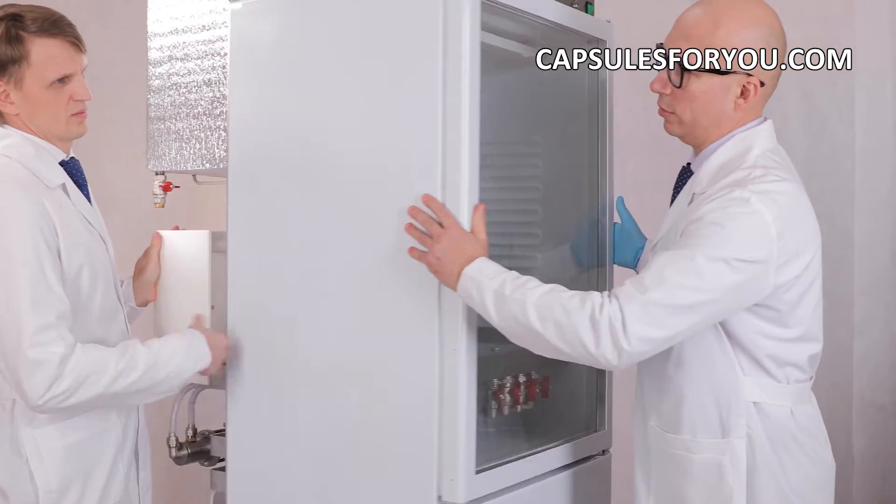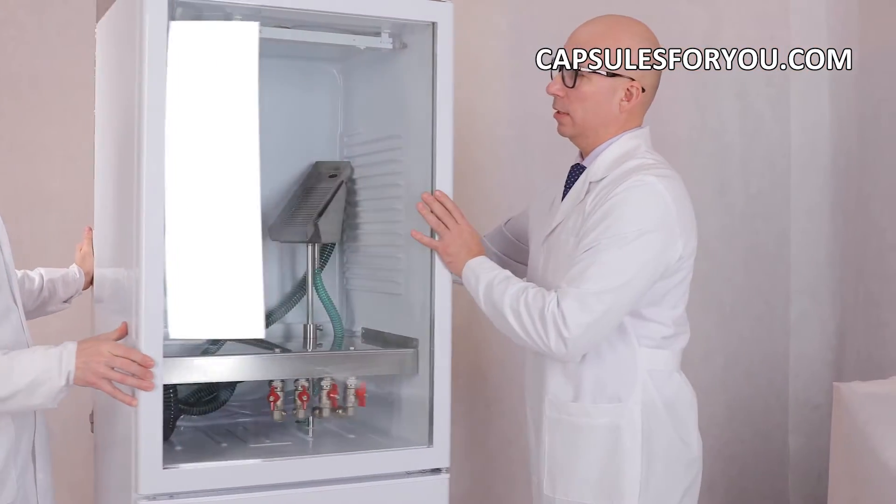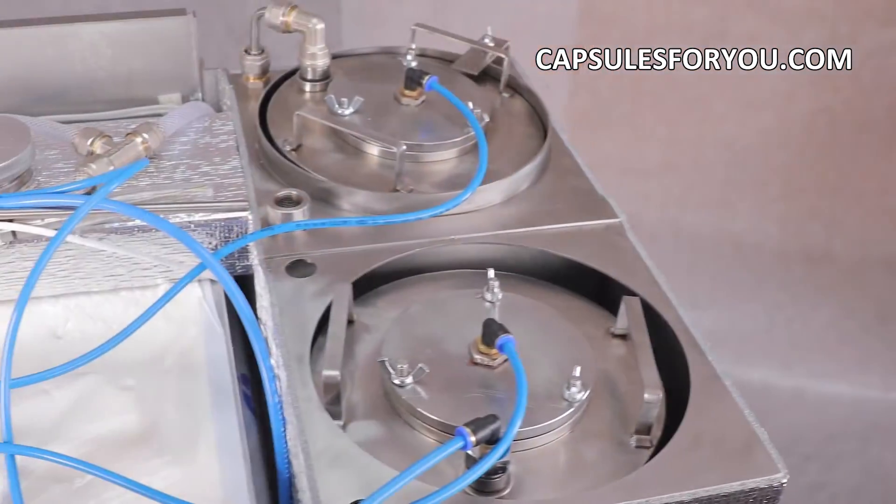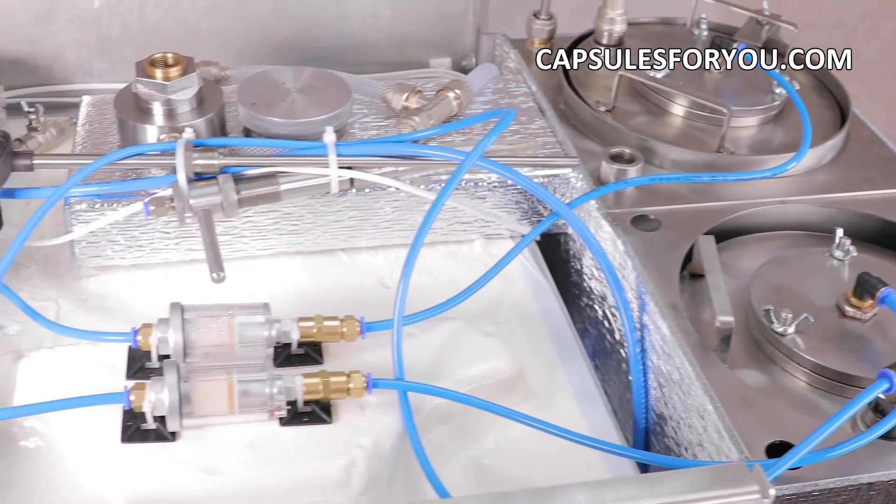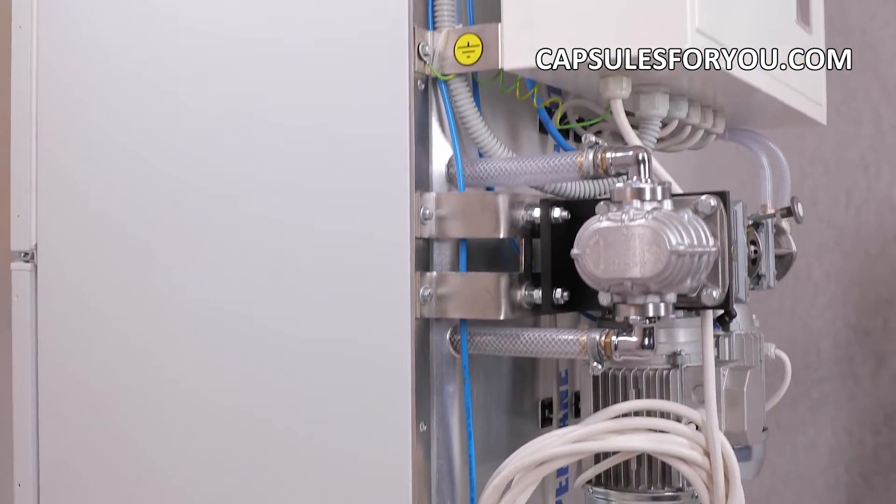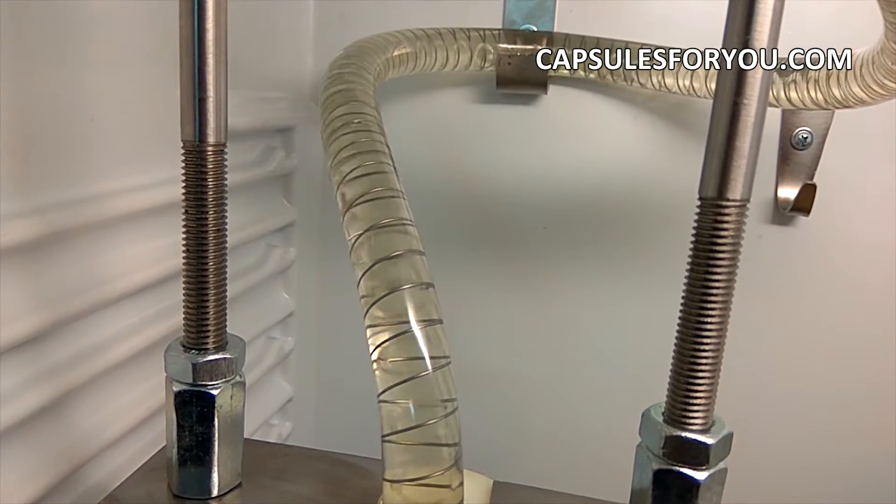We have three models of our equipment today. The first is the classic model for gelatin capsules with a diameter of 2 to 12 mm, with performance up to 15,000 capsules per hour.